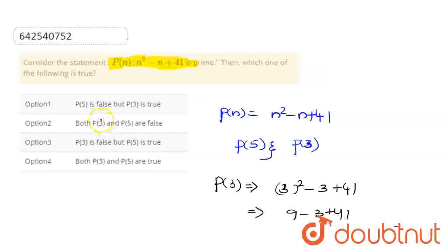Let's check the options: 'p(5) is false' - this is wrong. 'Both p(3) and p(5) are false' - this is wrong. 'p(3) is false but p(5) is true' - also wrong. 'Both p(3) and p(5) are true' - this is the right option.